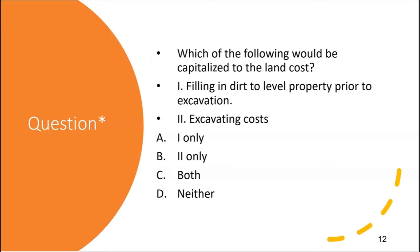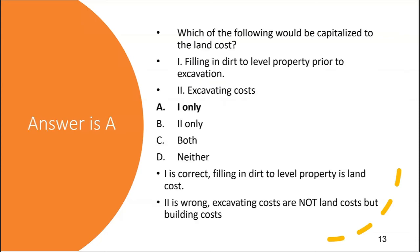Which of the following would be capitalized to the land cost — not land improvement, but land? Number one: filling in dirt to level property prior to excavation. Leveling means smoothing it out, making it flatter — bringing in dirt is a land cost. Number two: excavating costs — no, that's a building cost. So the answer is letter A, because filling in dirt to level the property prior to excavation is capitalized to the land cost. Remember: all costs incurred prior to excavation are land costs.